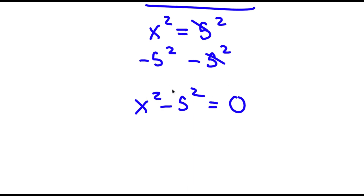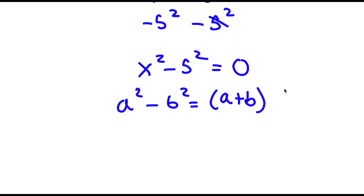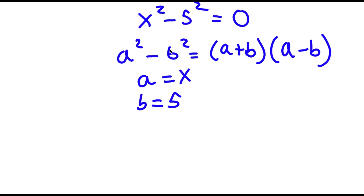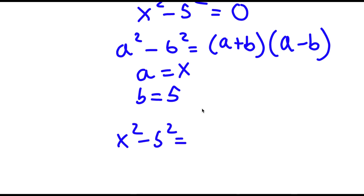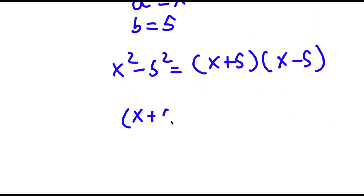Now, to solve something like this, I'm going to use the difference of squares rule from algebra, which states that if I have something in the form a squared minus b squared, this is equal to a plus b times a minus b. So in this case, a is going to equal x and b is going to equal 5. So x squared minus 5 squared equals x plus 5 times x minus 5, which is equal to 0.